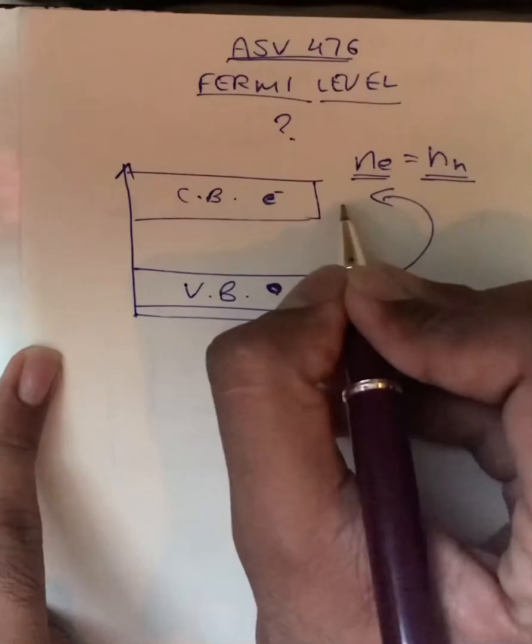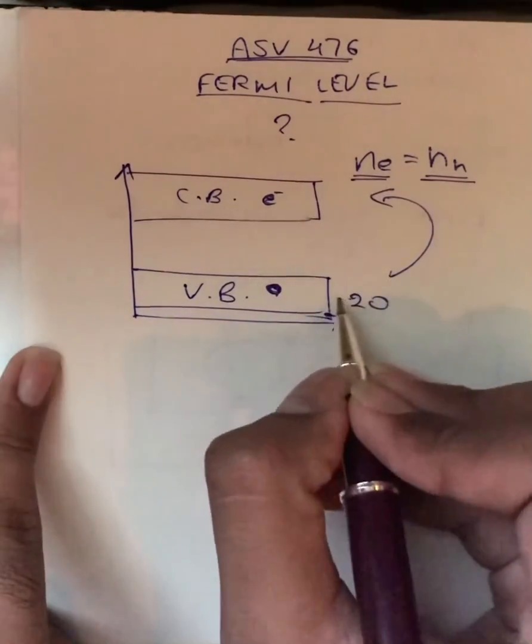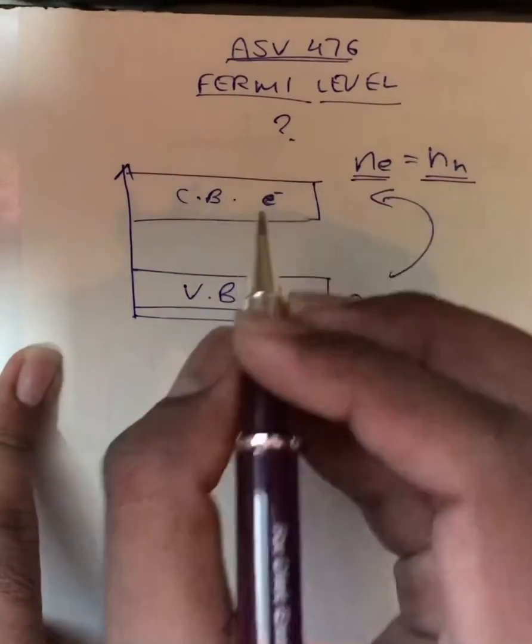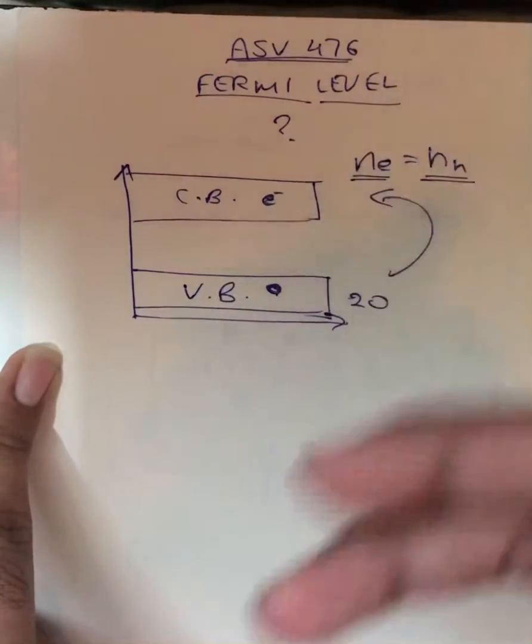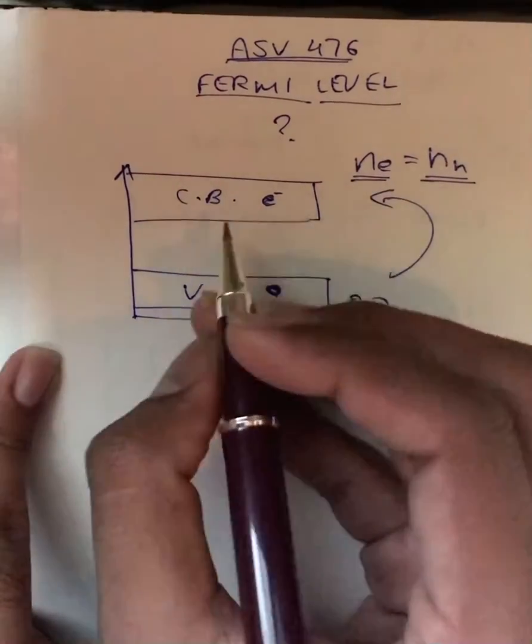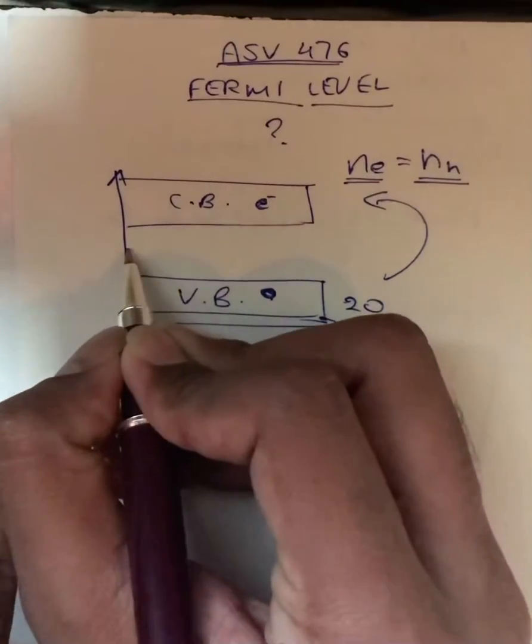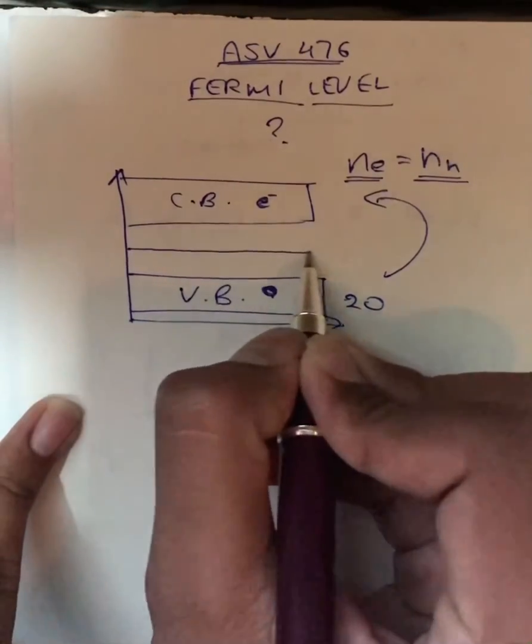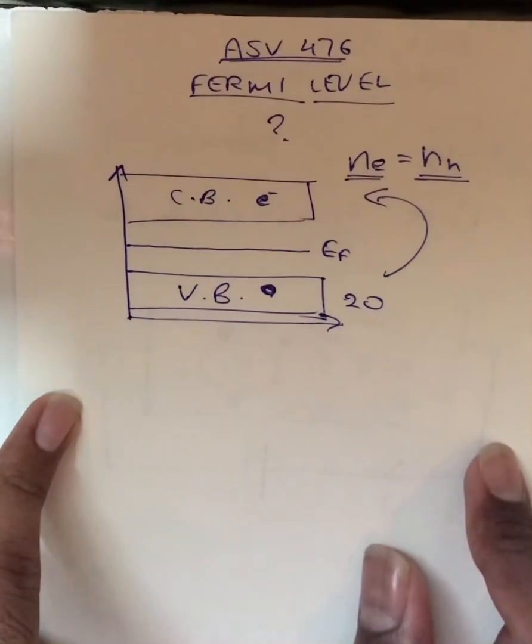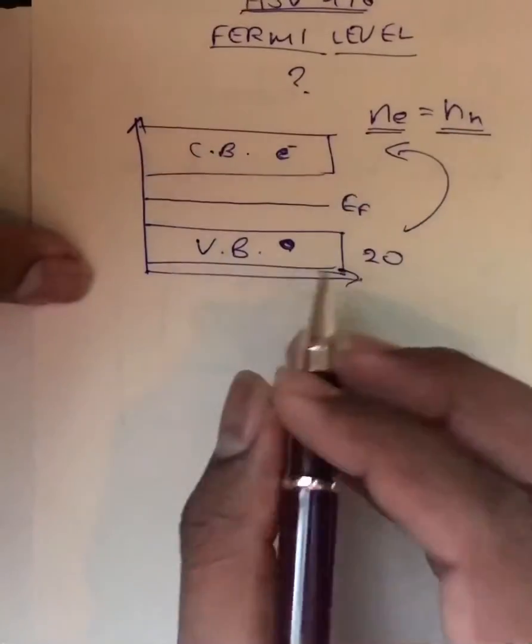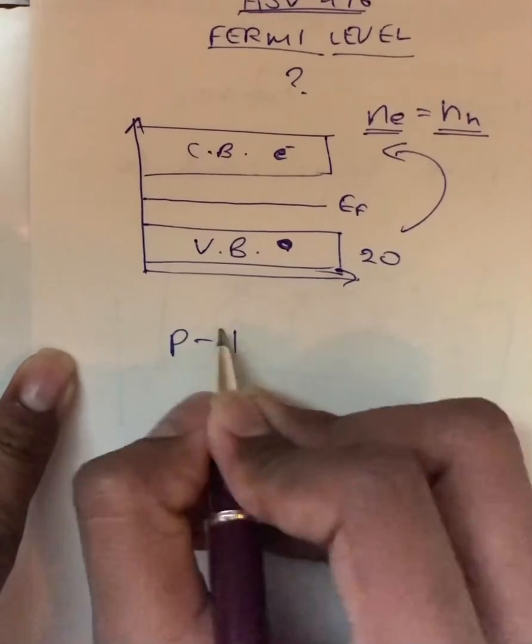So if there is a minus 20 on the upper side, there is a positive 20 on the lower side. So since there is equality in the charge carriers, therefore the Fermi level will lie exactly in between the conduction band and valence band. Now we will see for a p-type semiconductor.